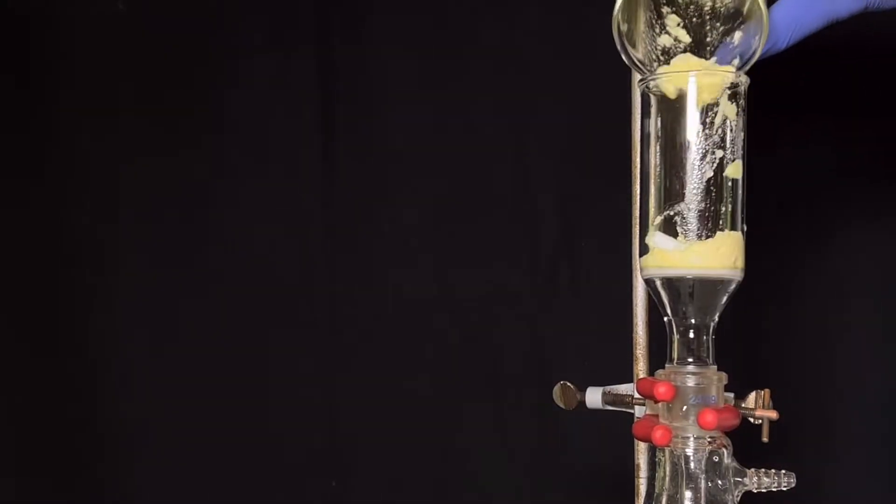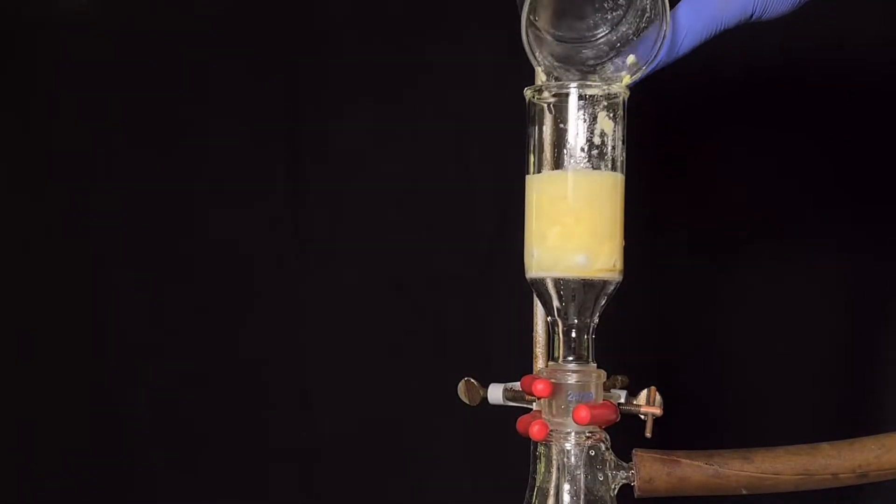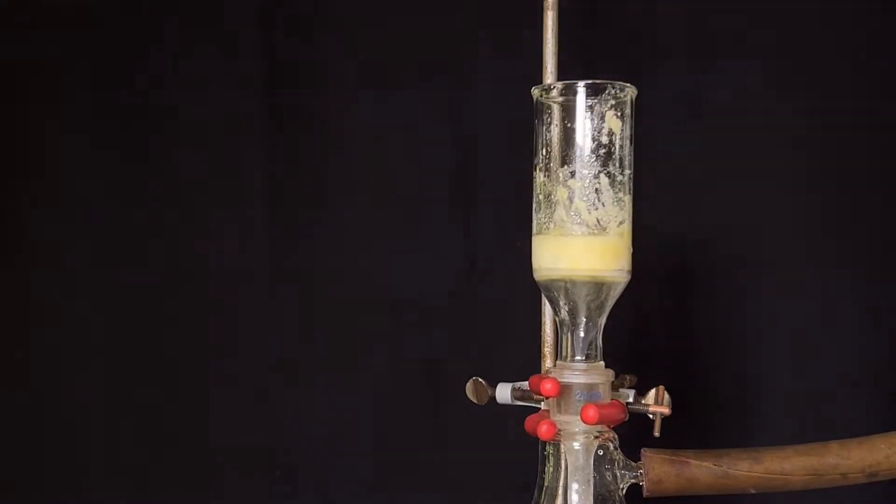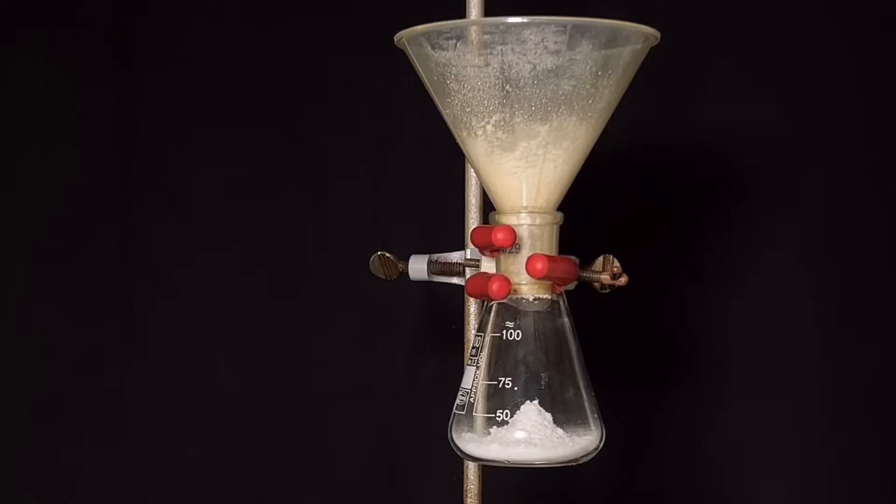The solid was then filtered. Here I am using vacuum filtration with a glass Buchner funnel. The crude solid was then washed with around 10 milliliters of cold ethanol. After washing with ethanol, we have a white solid. Vacuum was kept turned on for around 5 minutes to dry the product as much as possible.